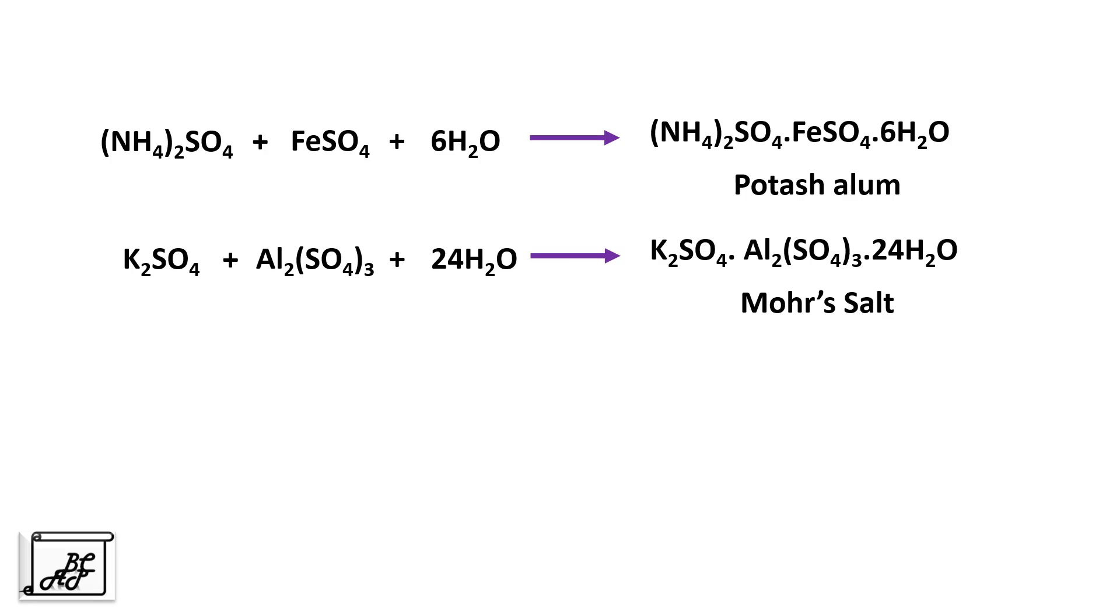Let's take an example. Ammonium sulphate if it is added to ferrous sulphate and with some water molecules, it gets converted into potash alum. Another example, potassium sulphate if it is added to aluminium sulphate and some water molecules, it turns into Mohr's salt. Both potash alum and Mohr's salt are called as double salts.